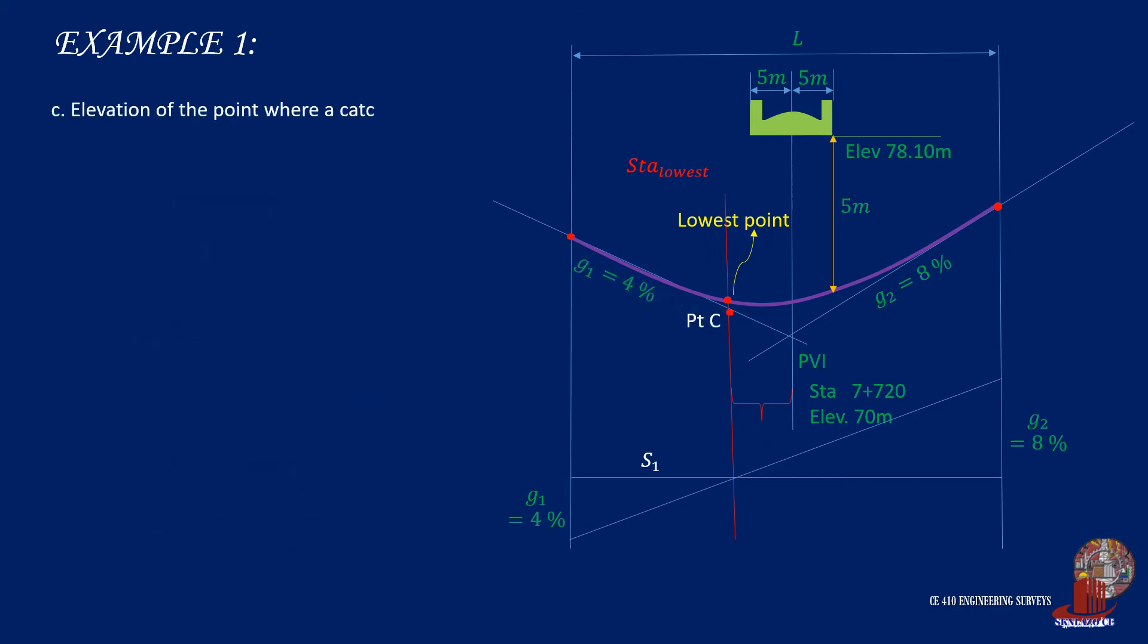The third requirement is the elevation of the lowest point. By starting from the PVI with the elevation of 70 meters, add the tangent projecting using G1 of 4% times distance Z, which is 33.25 meters. The resulting point denoted as point C has an elevation computed as 71.33 meters.